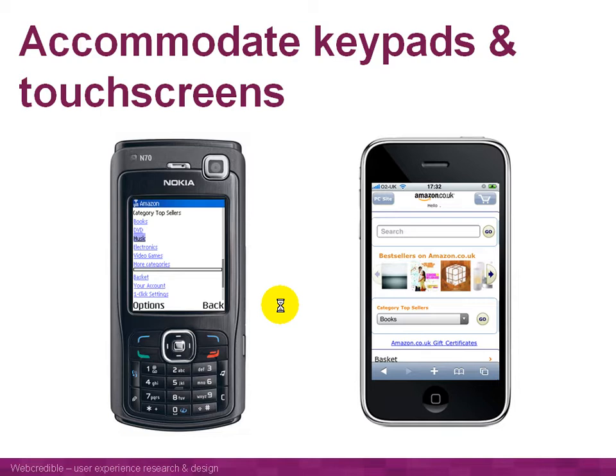When designing for touch screens, it's important that links are spread out and that buttons have a large clickable area — buttons should be quite large so we're not going to press one by mistake. When designing for mobile phones, it's important to accommodate both types of interfaces, whether keypads or touch screens.